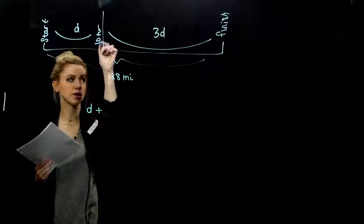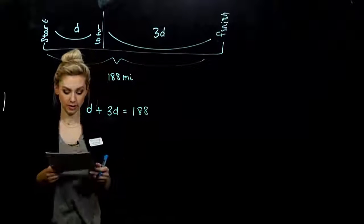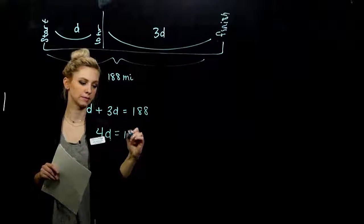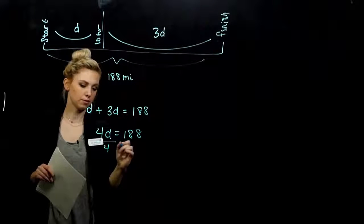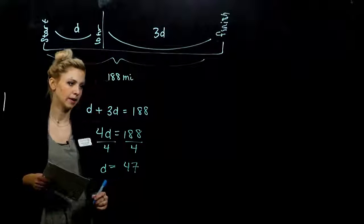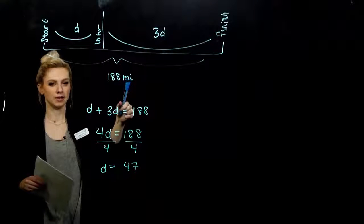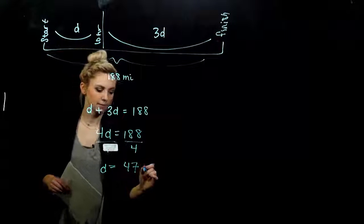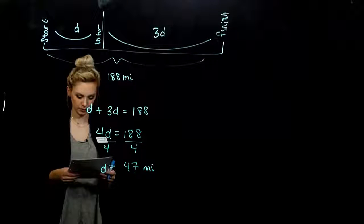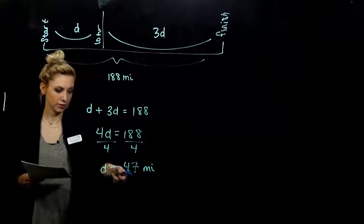If I let this distance be D, this distance is going to be three times D. And I know the entire distance was 188 miles. So if I've got the first chunk that he ran, and when he has left to run, together that has to be 188. So we can combine like terms. Divide by four. D is 47. And in this case, what are our units? Miles. So what were we asked to solve? How far had he run? So he ran 47 miles.